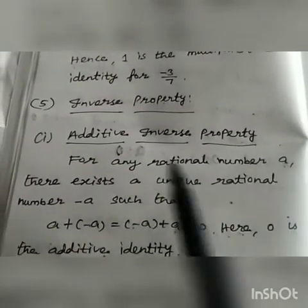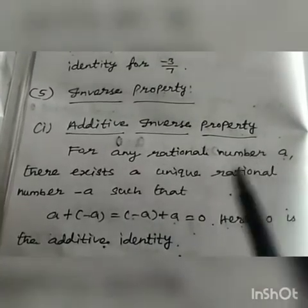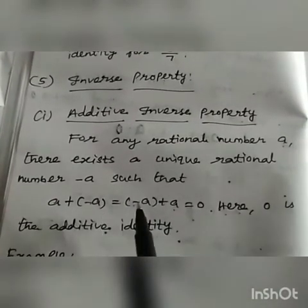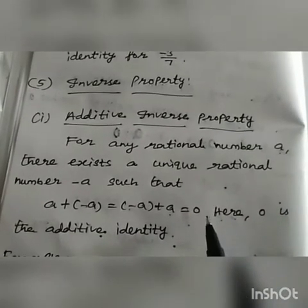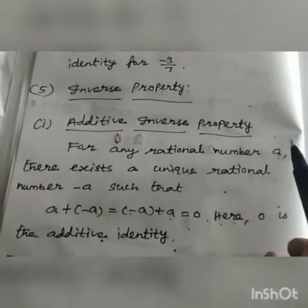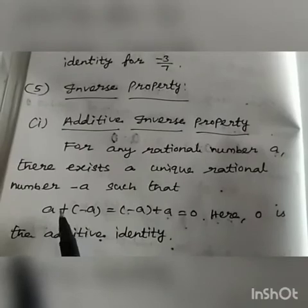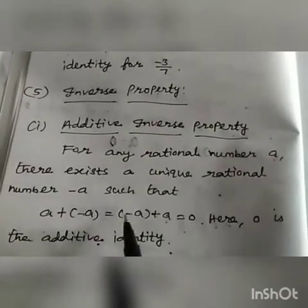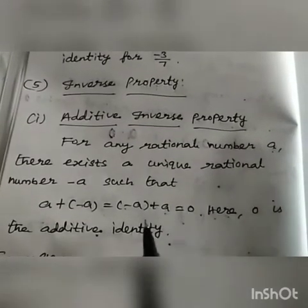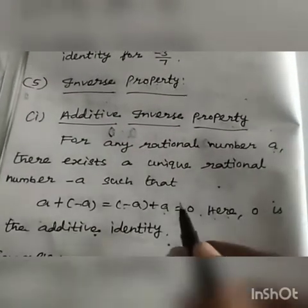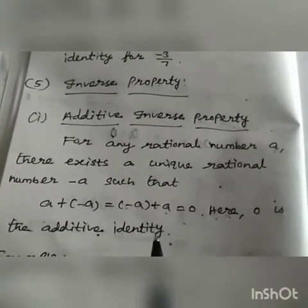For any rational number A, there exists a unique rational number -A, such that A + (-A) = (-A) + A = 0. So we take any rational number A and its opposite number -A. The order changes — (-A) + A = 0 only. So 0 is the additive identity.